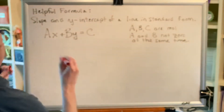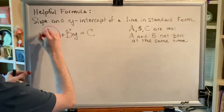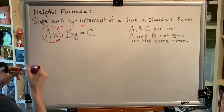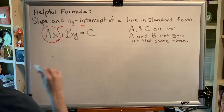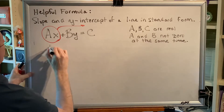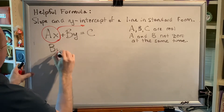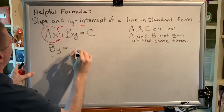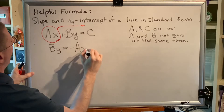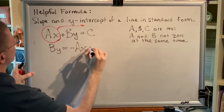The first step is to move the ax term to the other side. When a term changes sides, it changes signs, so we get by equals negative ax plus c.